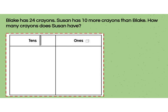Blake has 24 crayons. Susan has 10 more crayons than Blake. How many crayons does Susan have?